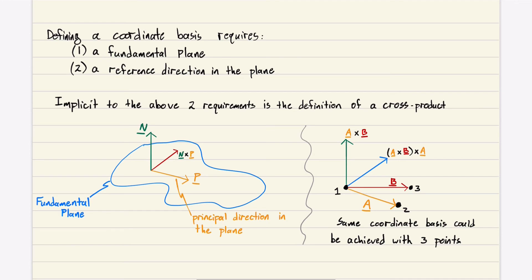This is just something extra, not really important, but I think it's interesting. Defining a coordinate basis requires a fundamental plane and a reference direction in the plane. Implicit in these two requirements is the definition of the cross product. Say you have a reference plane and a reference direction. We know the normal to the plane, n. If we cross n into P, we'll get our third basis vector. So we just defined our coordinate basis.